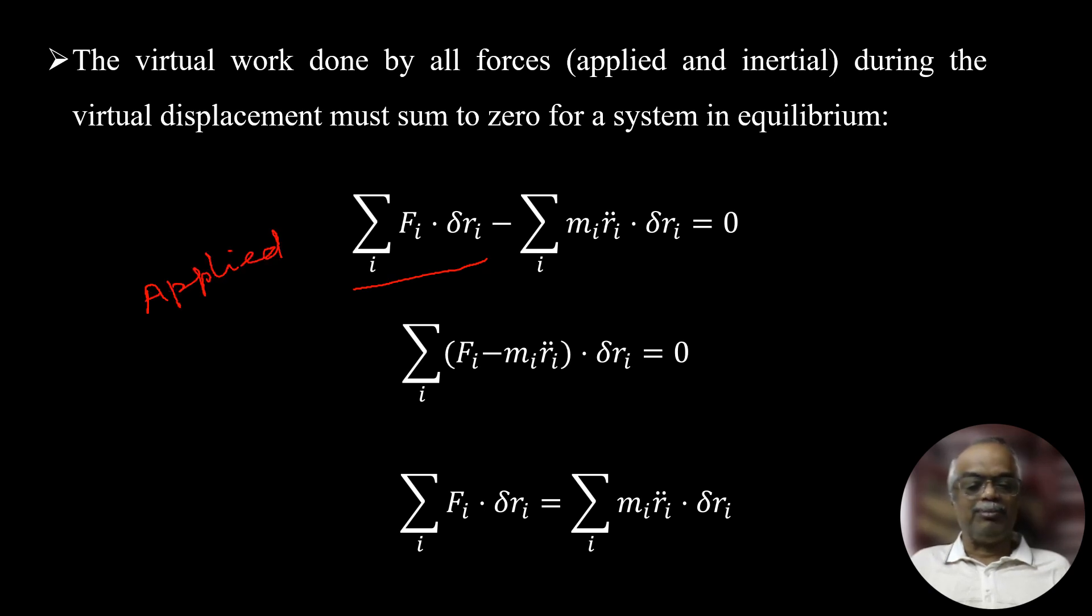The first term is sum of all the applied forces. This is applied force on nth particle and we are summing it up. So naturally this is the total force on all the particles. Similarly this is inertial force. Second term is inertial, inertial force of all particles, because we are making summation.